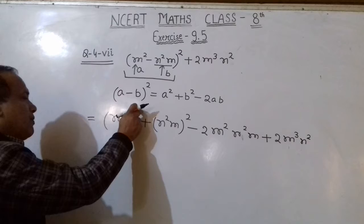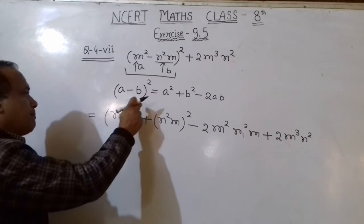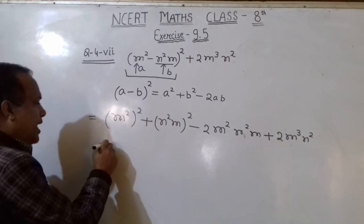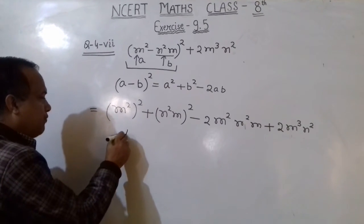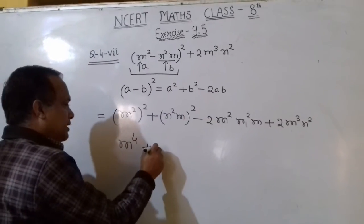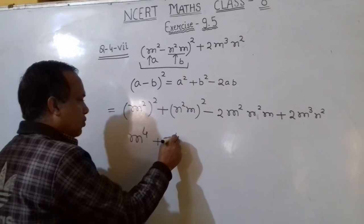M² to the power 2, that means we multiply power with power, that will be M⁴. So M² squared equals M⁴.